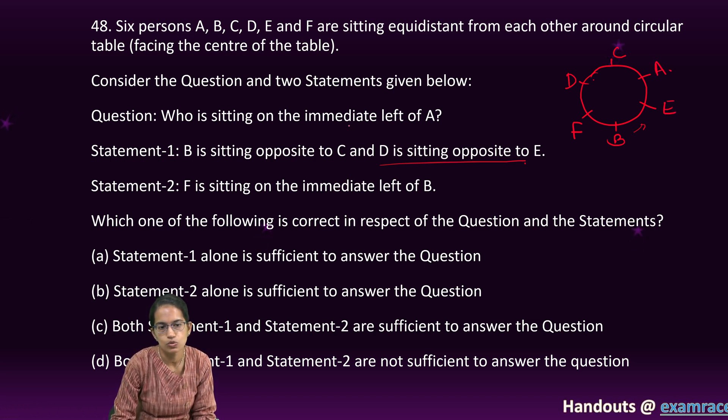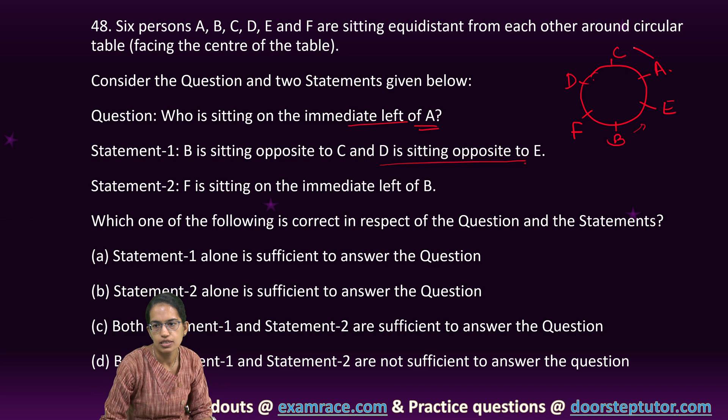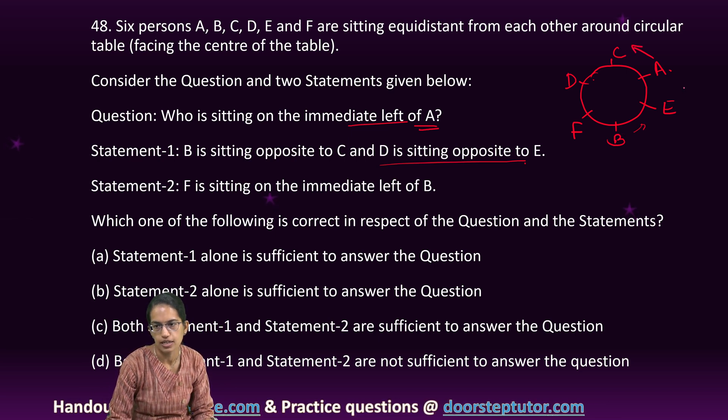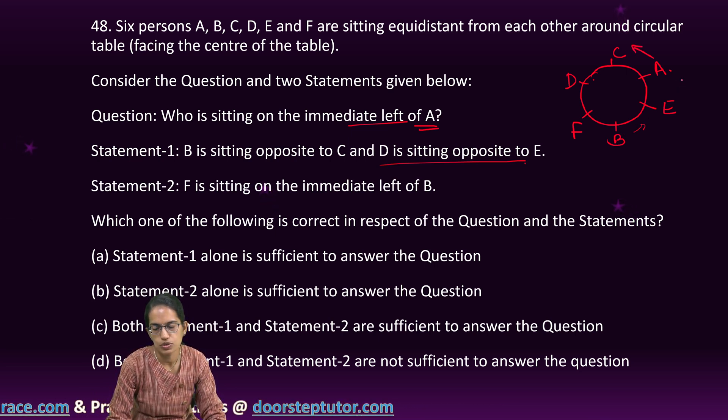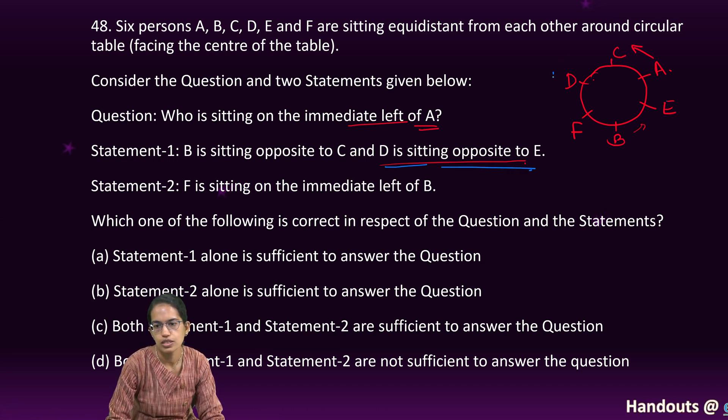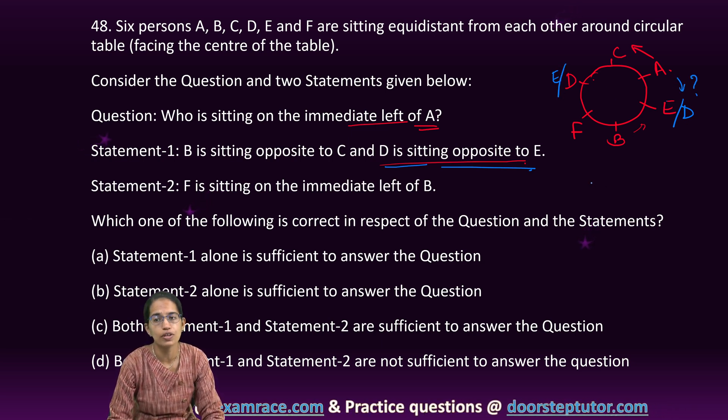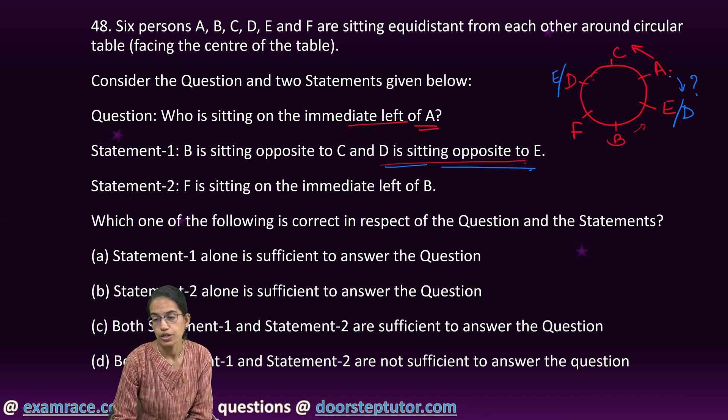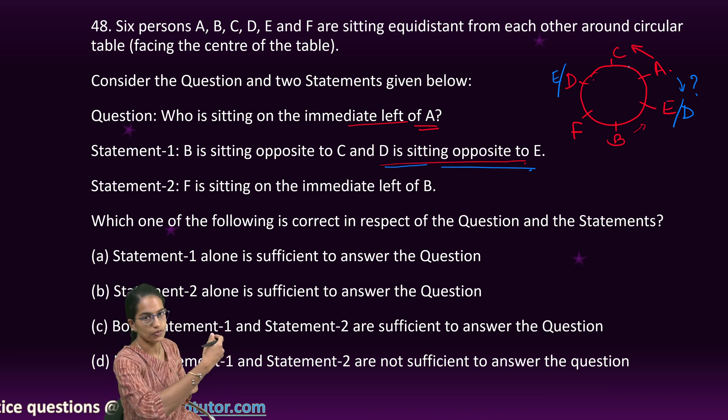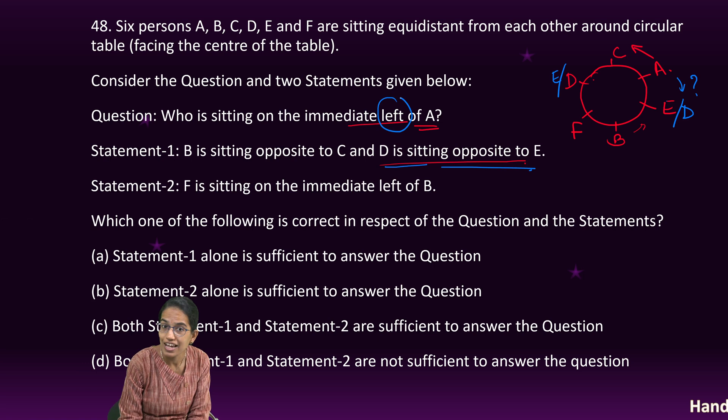The question says who is immediate left of A? A is sitting here. The right of A is C, that's correct. But the left of A, in this case E is sitting. But the only condition I know is D is opposite to E. So it could be E here and D here, or vice versa. Who is on the left of A? I cannot commit.